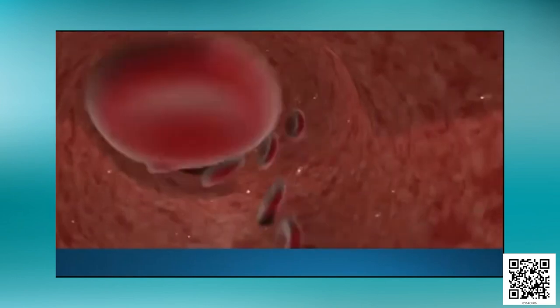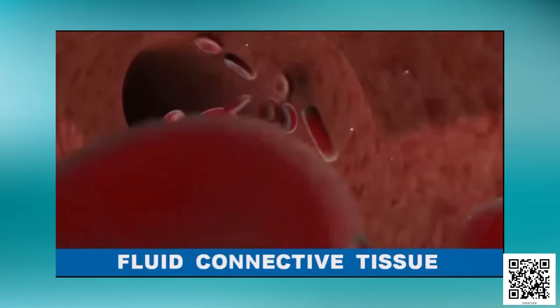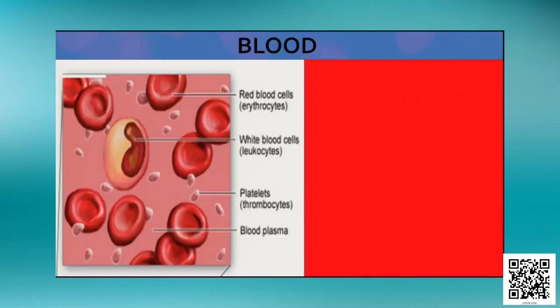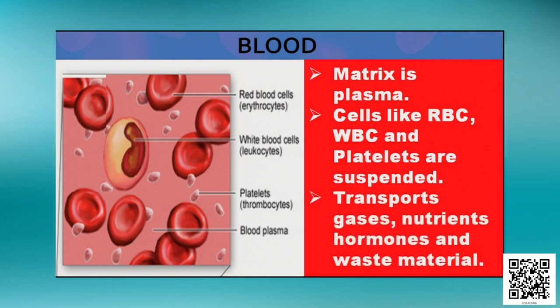Blood flows in capillaries, arteries, and veins and is a fluid connective tissue. The cells are loosely packed and suspended in a matrix called plasma, which contains water, protein, salts, and other particles. The cells are RBCs, WBCs, and platelets. Blood transports gases like oxygen and carbon dioxide, nutrients, hormones, and waste materials to different parts of the body.